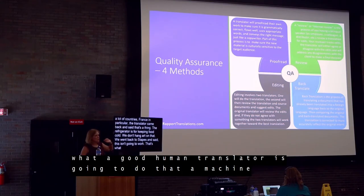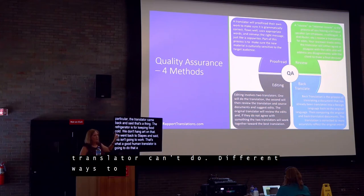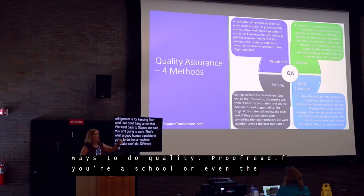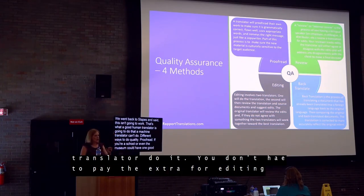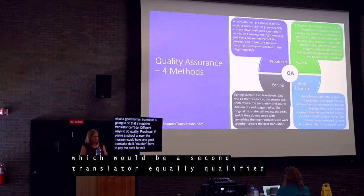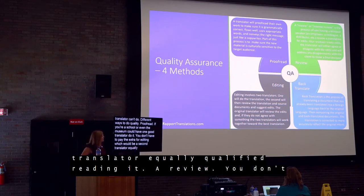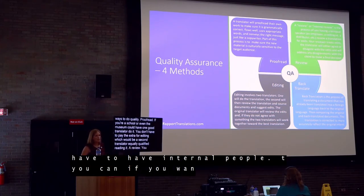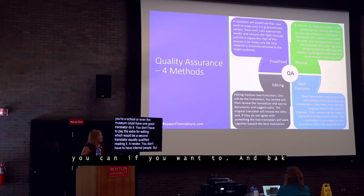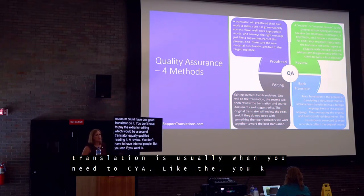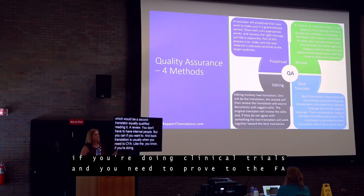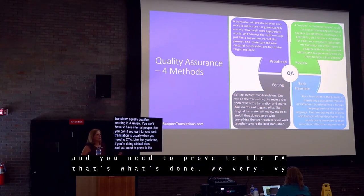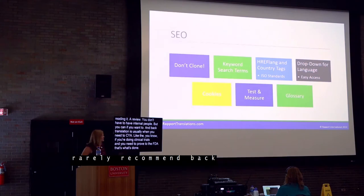Different ways to handle quality: a proofread means one good translator does it — if you're a school or a museum, you don't have to pay for full editing, which would mean a second equally qualified translator reviewing it. A review can involve internal people if you want. Back translation — where something is translated back into the original language to verify accuracy — is usually for CYA situations like clinical trials proving to the FDA what was done. We very rarely recommend back translation.